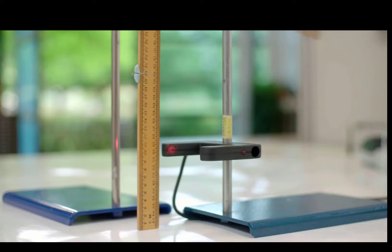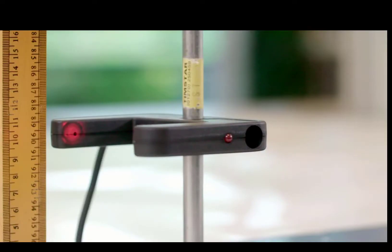In this experiment, a falling object is simulated by dropping a card from a known height. Its speed is measured just above the ground before it lands.